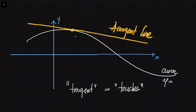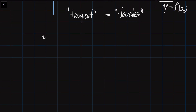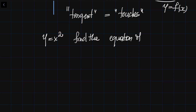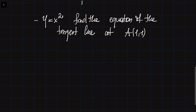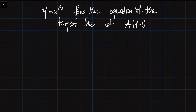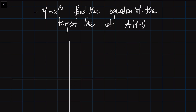So now if you are given the equation of this curve, how can we figure out the equation of the tangent line? Let's try to do this with an example. We are given the function Y is equal to X squared and we need to find the equation of the tangent line at the point A with coordinates (1, 1). First of all, I would like to sketch the curve in order to imagine what we have to do.